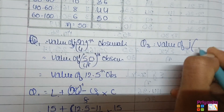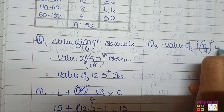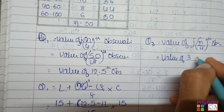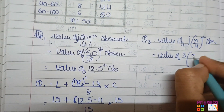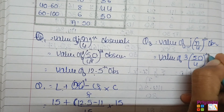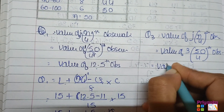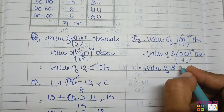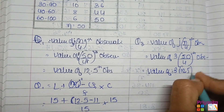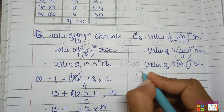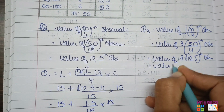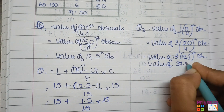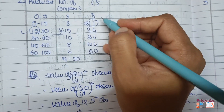In the same way, find Q3. The value is 3n upon 4: n is 50, divided by 4 gives 12.5, multiplied by 3 gives 37.5th observation.